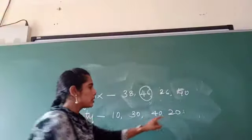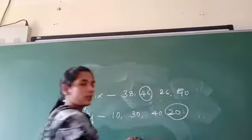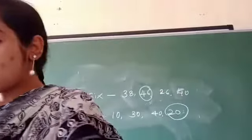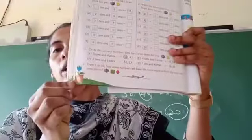You would circle that twenty. Ten, thirty, forty, twenty is here. Circle the number. Like this, you have to complete. Okay. Now, come to page number one hundred and two. One hundred and two.